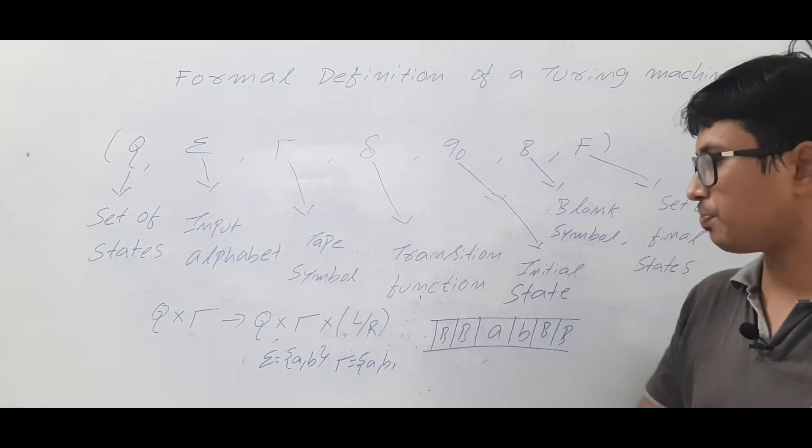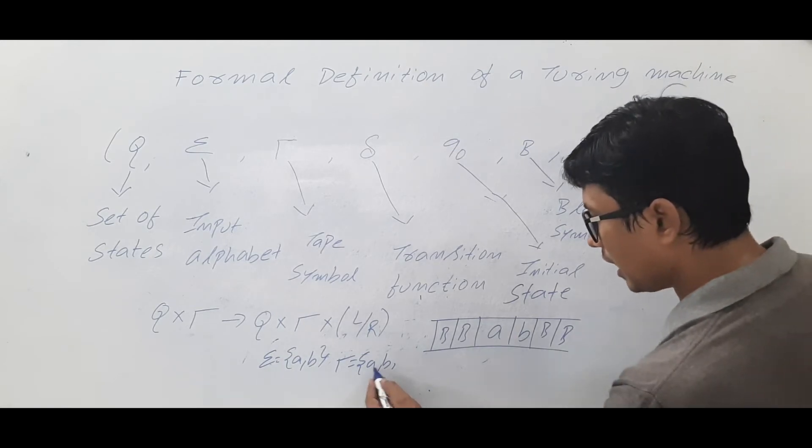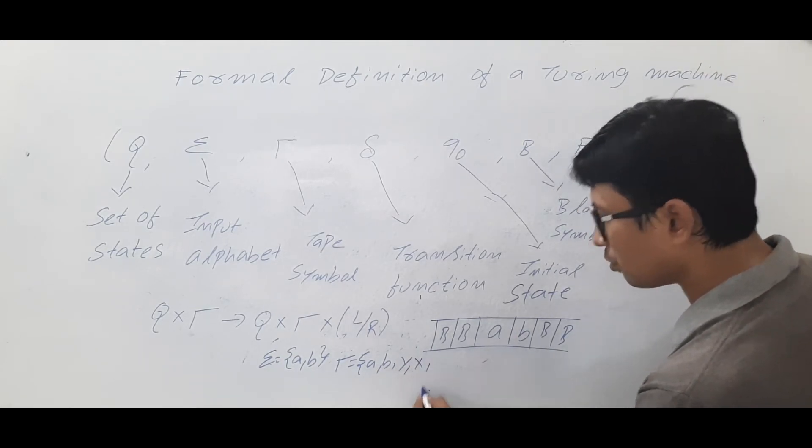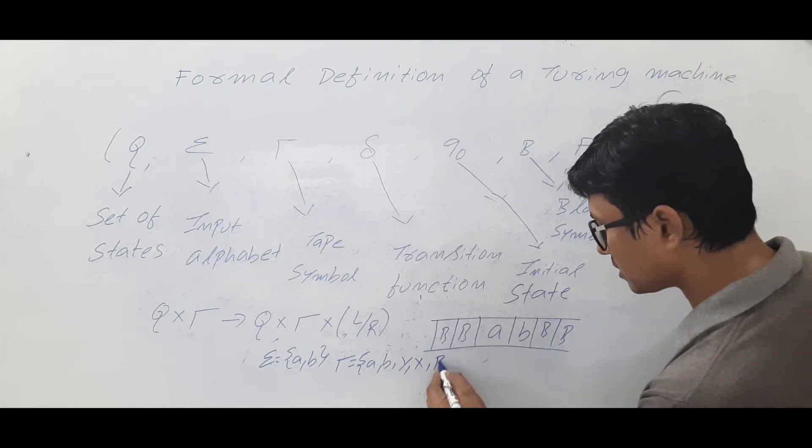So a comma b are also part of the tape symbols. I want to modify a as y and b as x, and the blank symbol is b.